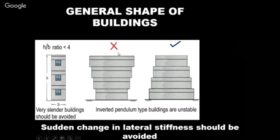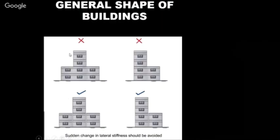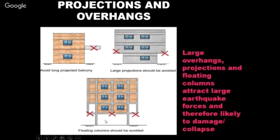Soft story is a condition where the ground floor is open and flexible while upper floors are stiffened by rigid infill walls. According to codal provisions, about 70–80% of earthquake forces concentrate at the soft story level. When 70% of forces are applied to the column-beam joint region at that level, the joints fail and the whole building collapses. This was seen extensively in the Bhuj earthquake.